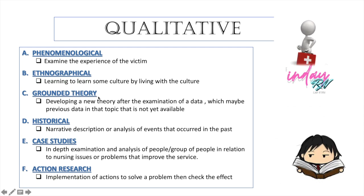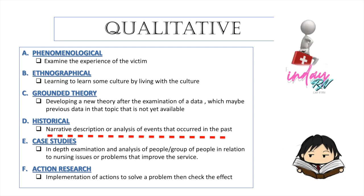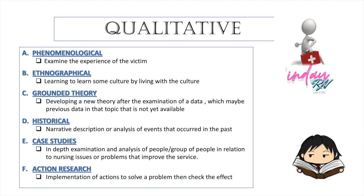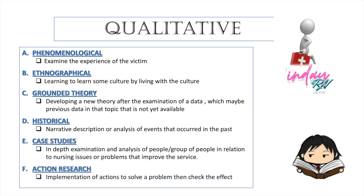The next one is Historical research. Here in this historical research, it is a narrative description or analysis of events that occurred in the past. It is related to history by its name. The researcher will collect past data and evaluate the old data, and will make a relationship between what is happening at present and what will happen in the future. This kind of research will be used not only today but also in the future. An example is how handwashing started and how it affects the future medical world. You're just going to think about history, today, and the future.